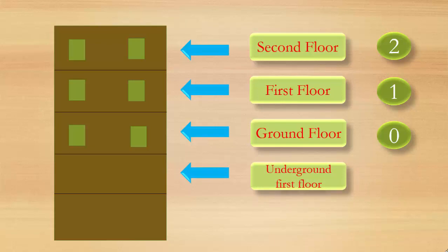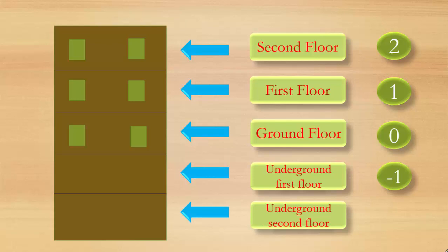Now let's move further. This is the underground first floor, denoted as minus one. This is the underground second floor, denoted as minus two. In different malls and new buildings, you can see underground floors used as basement or parking, denoted as negative one and negative two — mostly shown in the lift section.